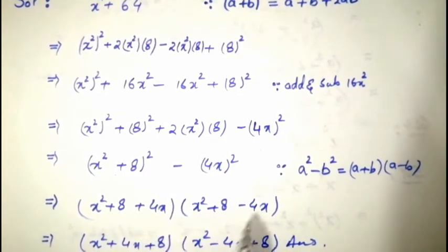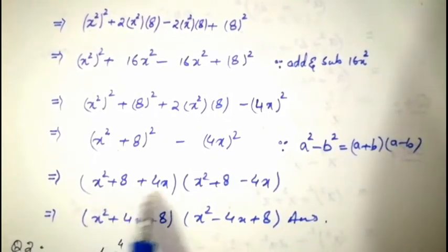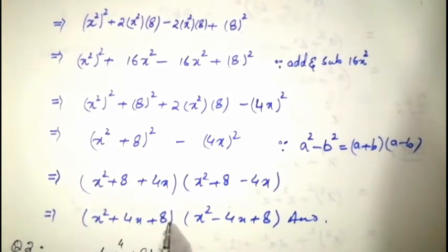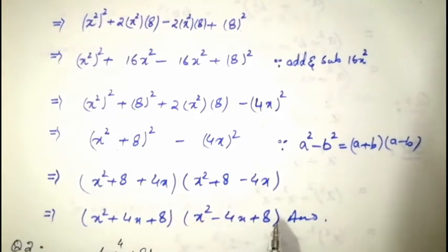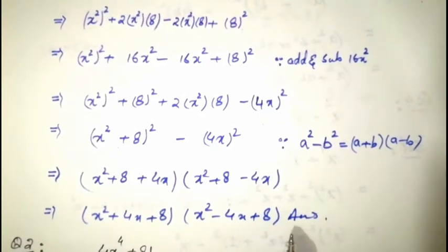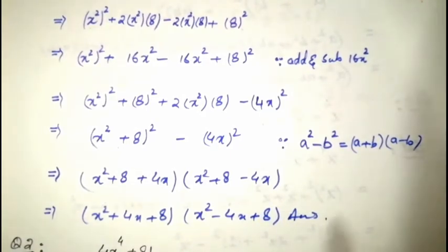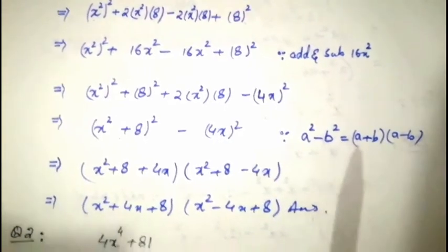Simplifying further by writing the x-value terms first: (x² + 4x + 8)(x² − 4x + 8). This is the final answer. It cannot be simplified further. That was question number one. Now we move to question number two.